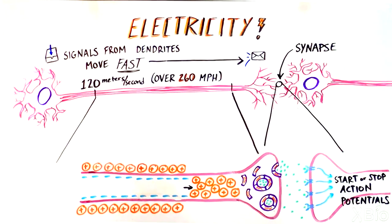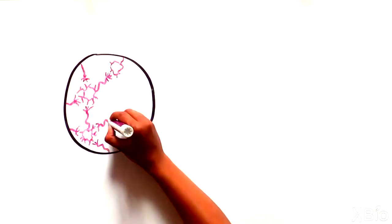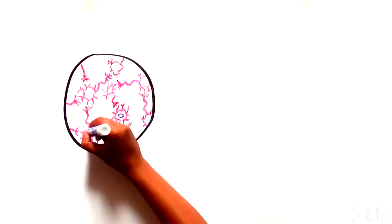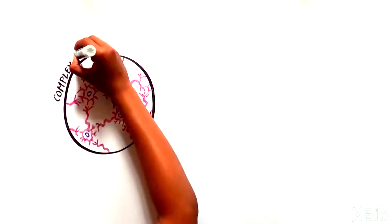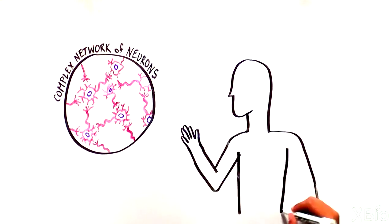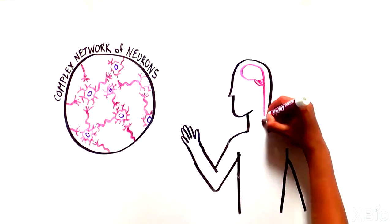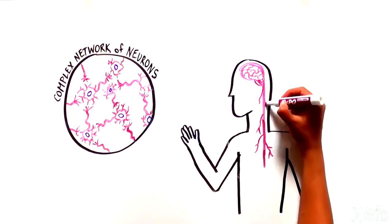Through this process, billions of cells are able to talk to each other and form the complex network of interconnected neurons that make up the nervous system. The cells that make up the brain and spinal cord are collectively called the central nervous system, or CNS.